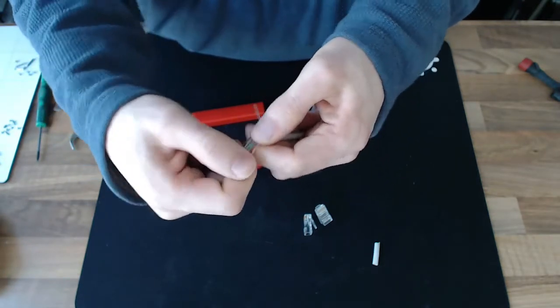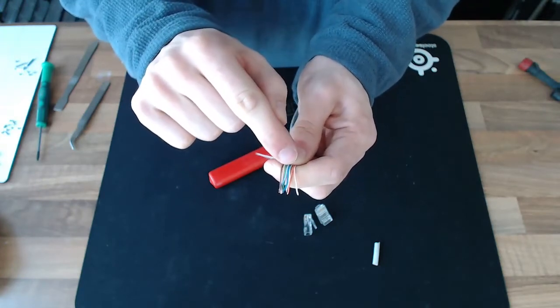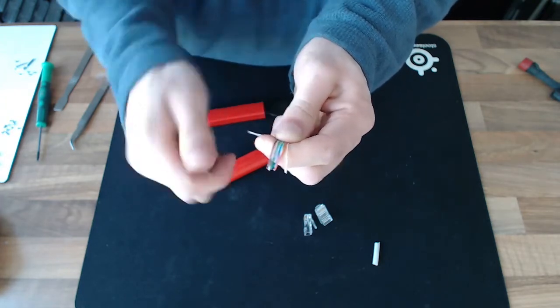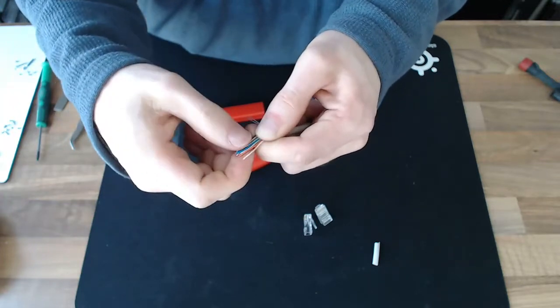Just to run through that again: white orange, orange, white green, blue, white blue, green, white brown, brown. So the cheat sheet is the color and white stripes alternate.